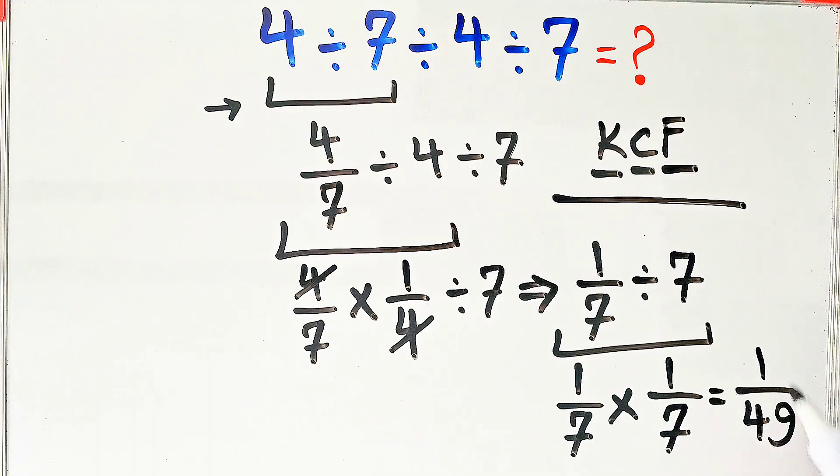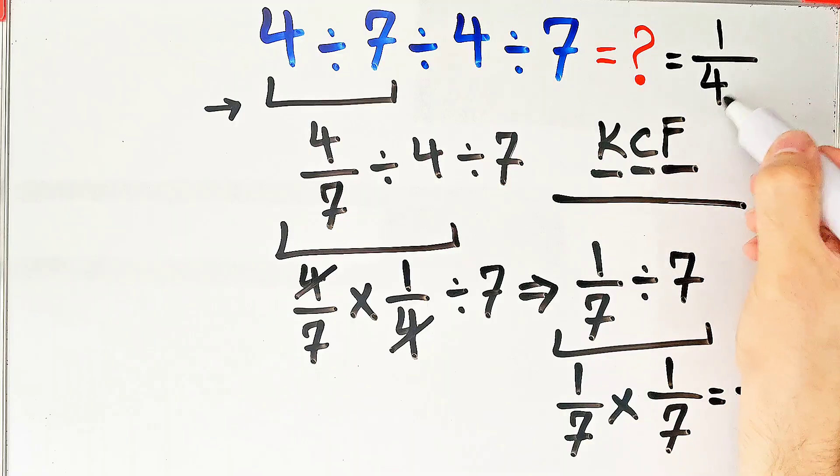Now we have 1 over 7 times 1 over 7 which equals 1 over 49. The final answer of this question equals 1 over 49.